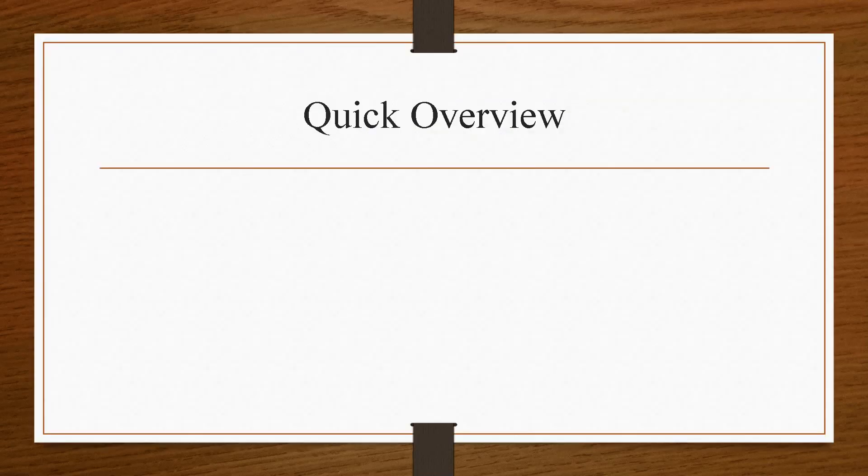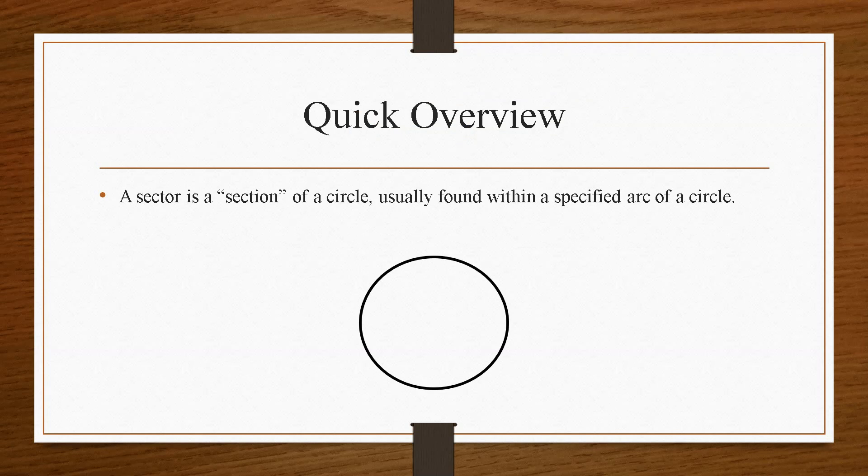So if we take a quick overview, a sector is a section of a circle usually found within a specified arc of a circle. Similarly to arc length, what we have is a section of a circle which has been either removed or we are interested in.